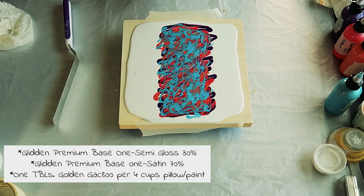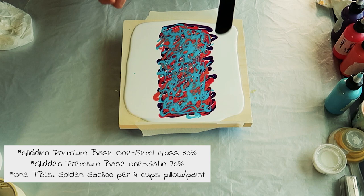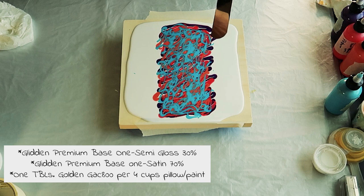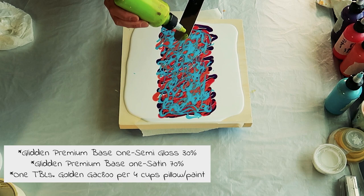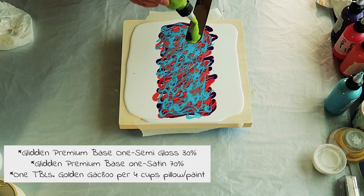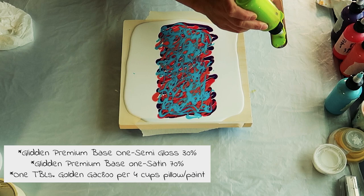So I use like two-thirds of the Satin and one-third of the gloss together. And then, of course, one tablespoon of GAC 800 per four cups of that wall paint. And sometimes a little water, if it's been sitting. It just doesn't hurt to add a little water. Let's do like a green.